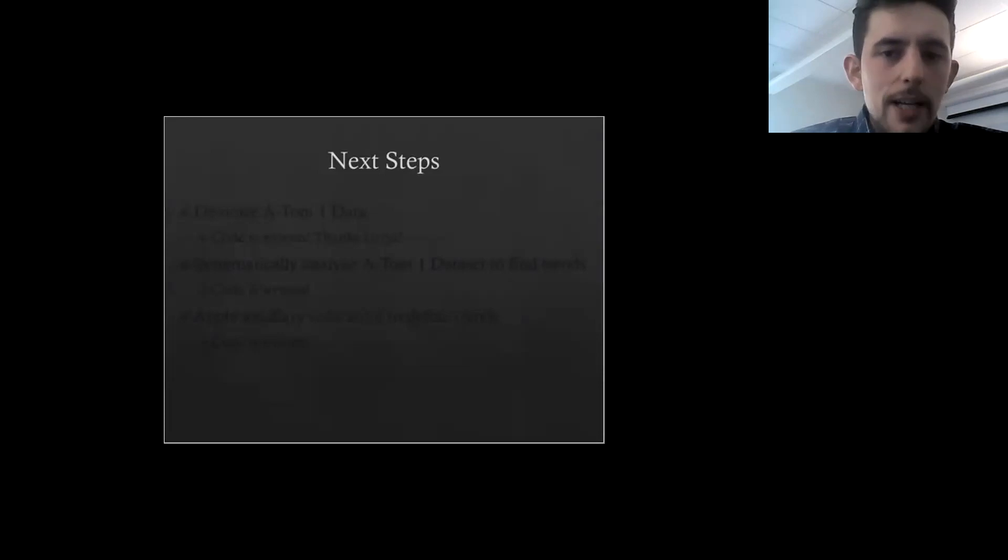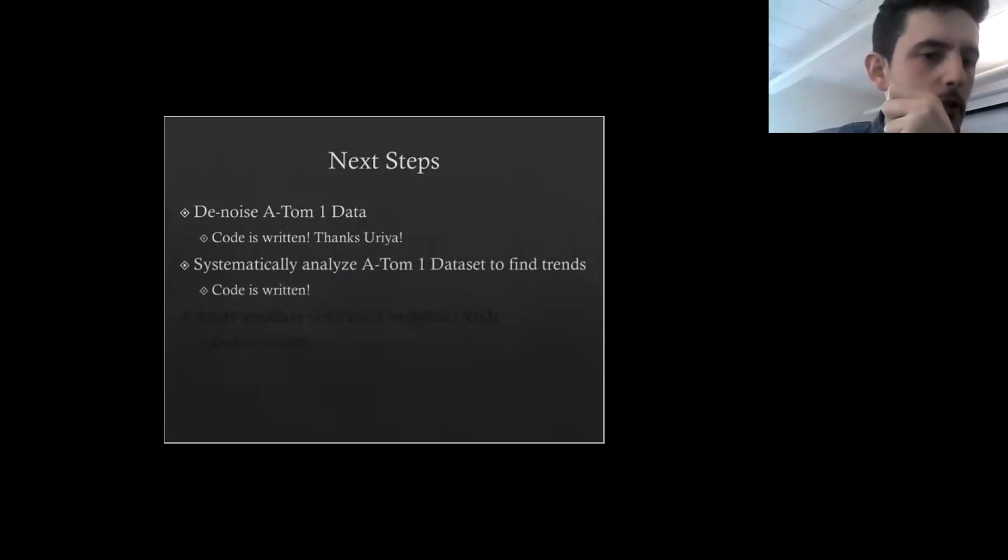Here are the next steps we want to make. Even though TDA mapper is resistant to noise, we still want to denoise it for quality assurance, just to make sure we're not looking at fluff. The awesome thing is that Uria, one of my lab partners, coded an entire package using another topological method just for this purpose of denoising. So that was awfully convenient. Thank you, Uria. After that, we want to systematically analyze the ATOM dataset to find trends. We want to try to find similar shapes between different data sets. The code for this is written, as I just showed you. Finally, we want to apply the ancillary coloration ability to define why these trends exist. Again, this code is already written. All the framework is there. It's just the analysis that has to be done.